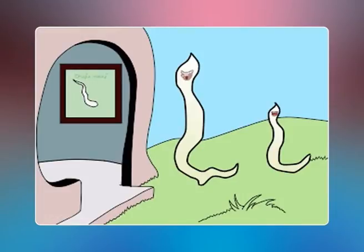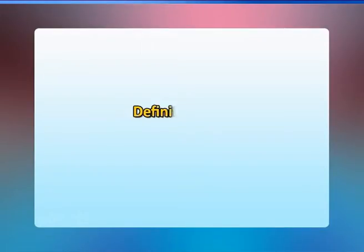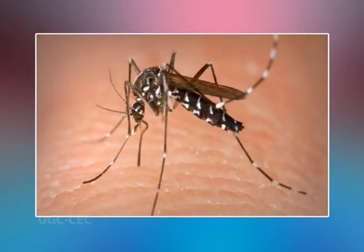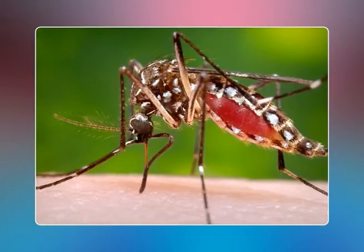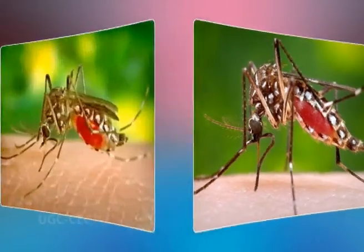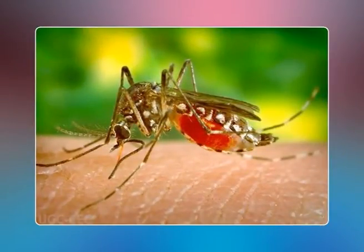Wuchereria bancrofti passes its life cycle in two hosts: man and mosquito. Man is the definitive host, in whose lymphatic system the adult worms are harbored. Microfilariae are liberated into the blood and can circulate in the peripheral blood for a considerable time, where they can be picked up by mosquito species during a blood meal. The intermediate host is the mosquito, in which microfilariae undergo further development, after which they become infective to man. A large number of mosquito species of the genus Culex, Aedes, and Anopheles act as intermediate hosts.